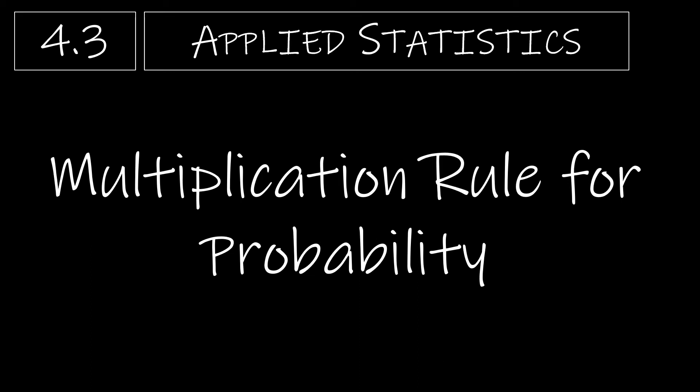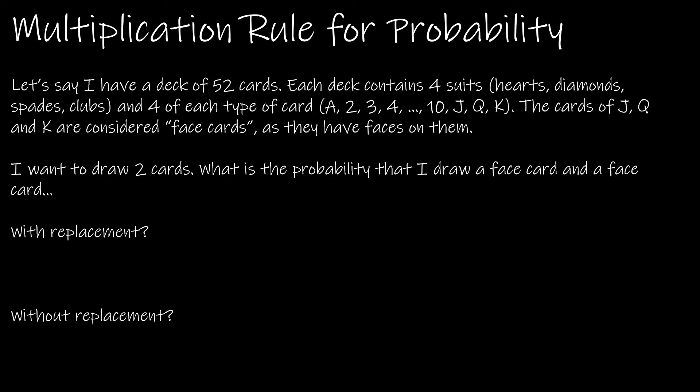In this video, we're going to learn about the multiplication rule for probability. I want to take a look at one question asked two different ways so that we can look at the differences in the multiplication rules. Just as we had the addition rules — the addition rule and the general addition rule — we're dealing with the same thing here. With addition, we were worried about whether or not events were mutually exclusive. With multiplication, we're worried about whether events are independent.